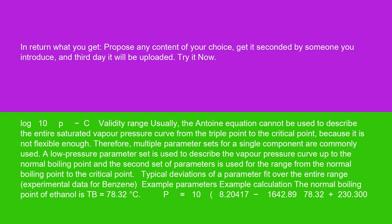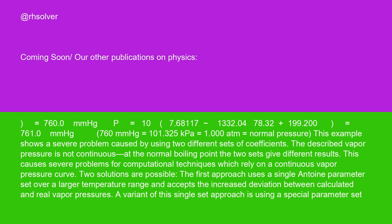Experimental data for benzene. Example parameters, example calculation. The normal boiling point of ethanol is TB equals 78.32 degrees Celsius. P equals 10^(8.20417 minus 1,642.89 over 78.32 plus 230.300) equals 760.0 millimeters of mercury.